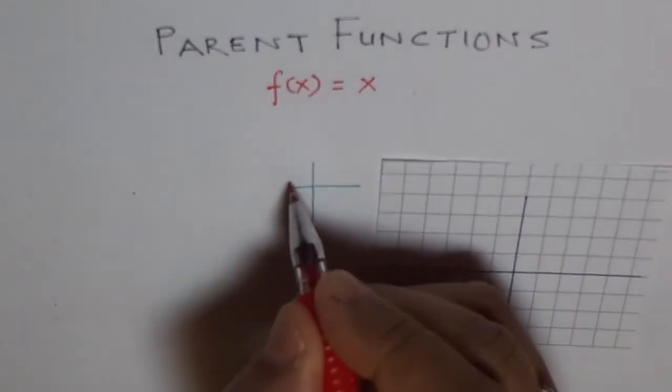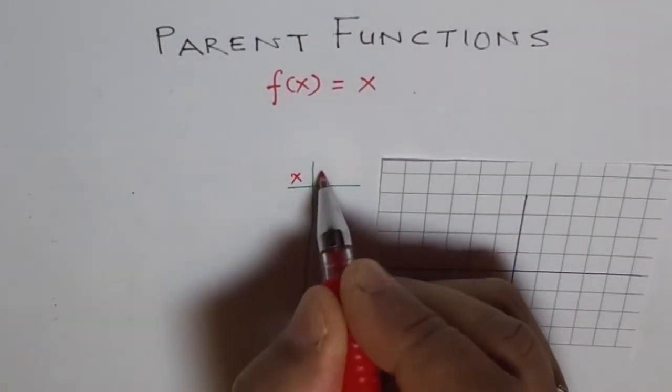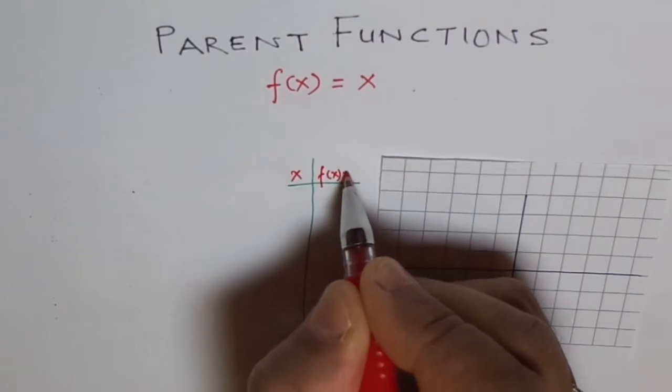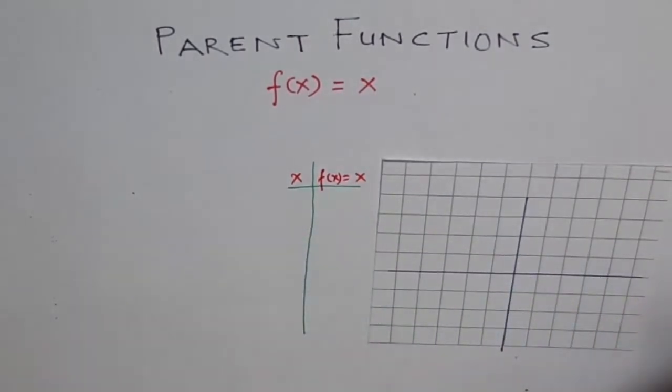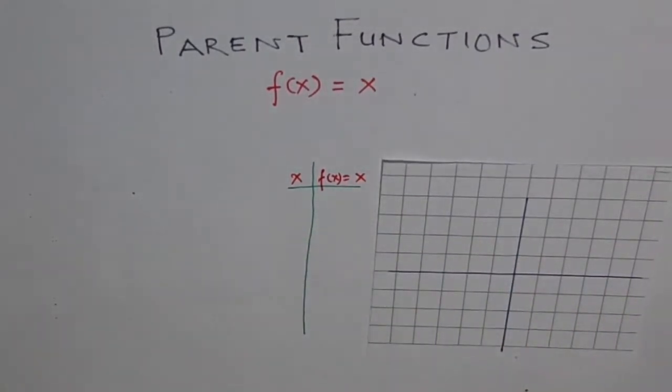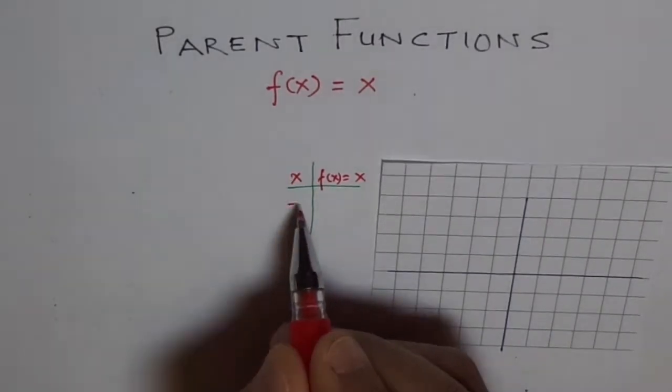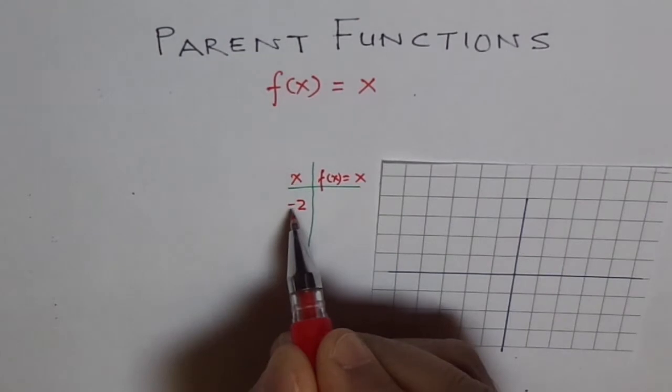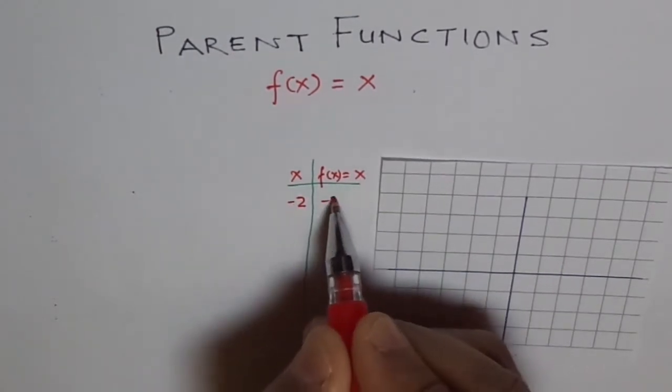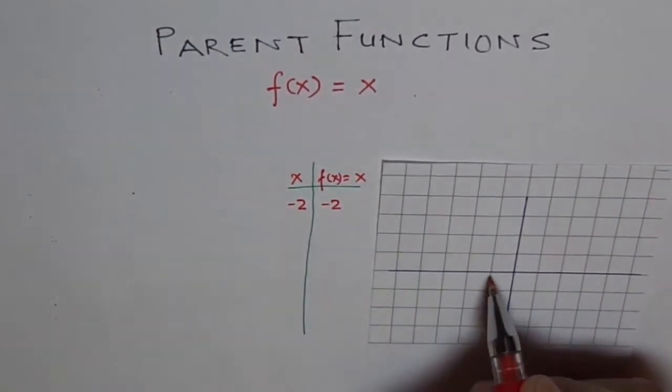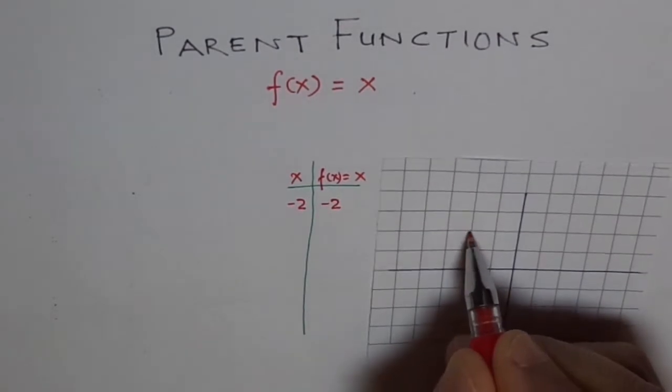Now for a line we just need 3 points, 2 are enough to draw a straight line. But in our examples especially when we deal with transformations we should take 5 points and the critical 5 points are the values at minus 2. So at minus 2 the value is minus 2, which is 1, 2. That's minus 2.